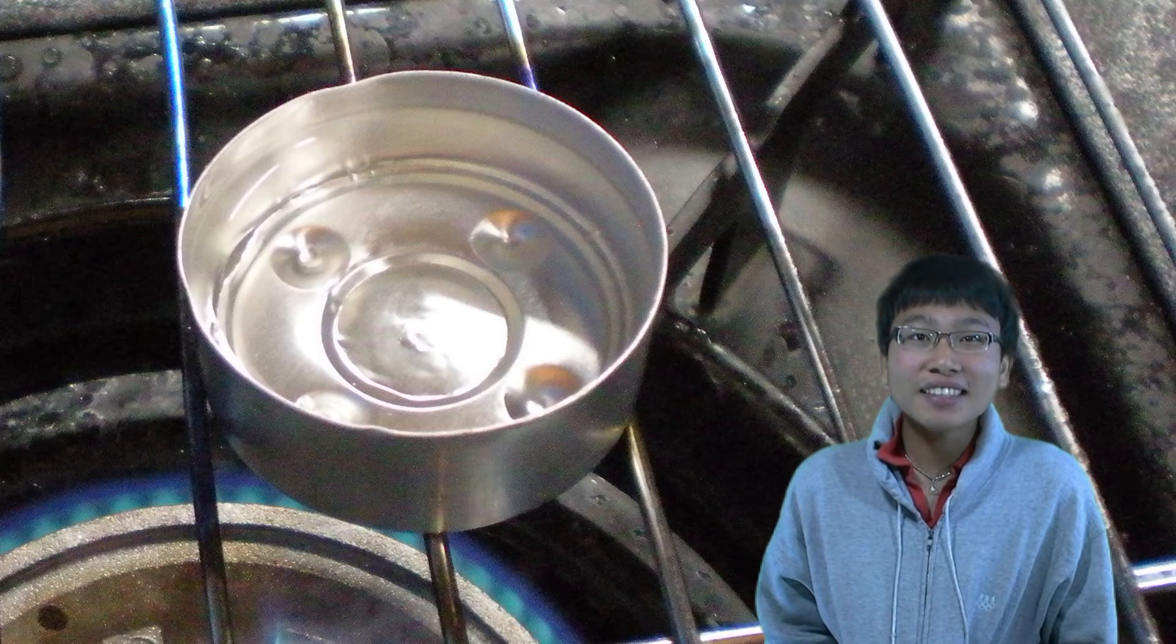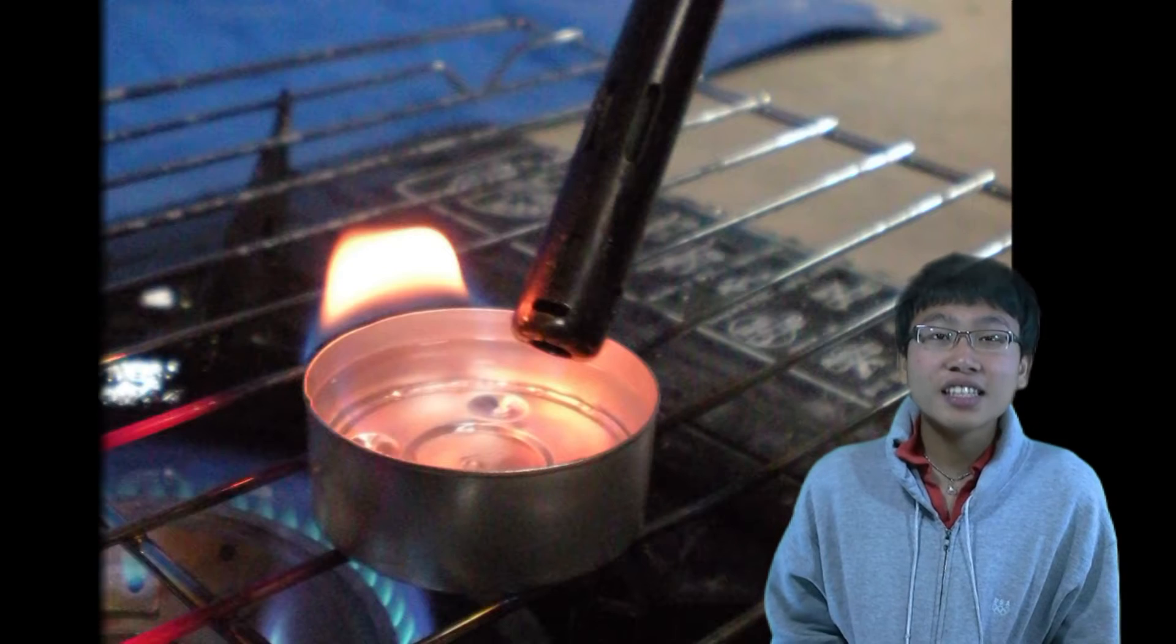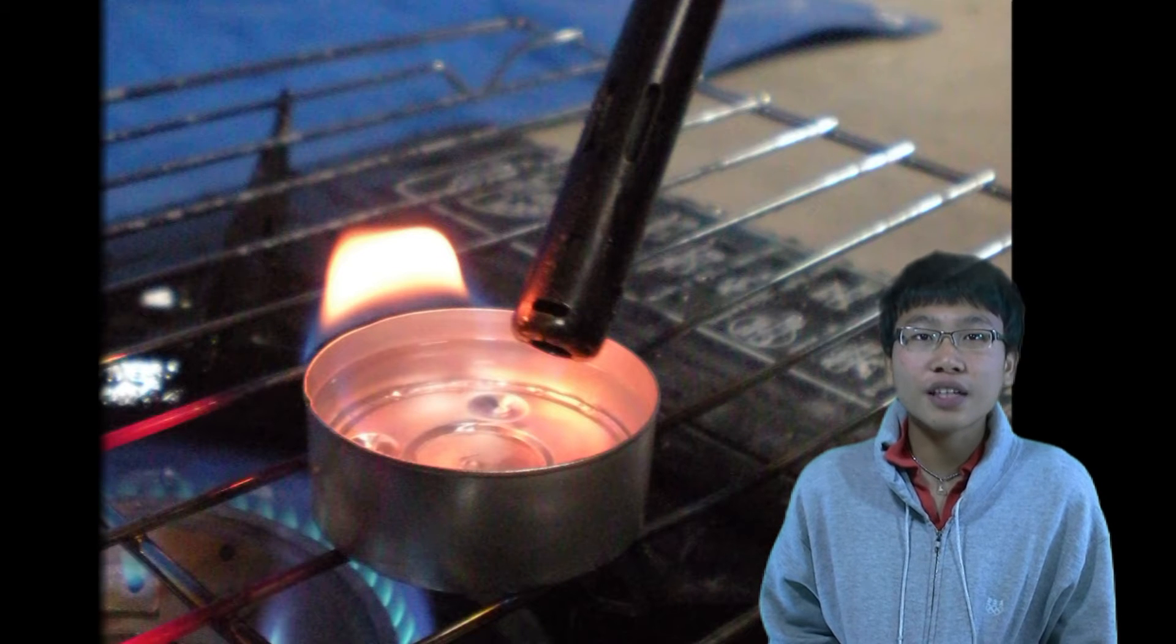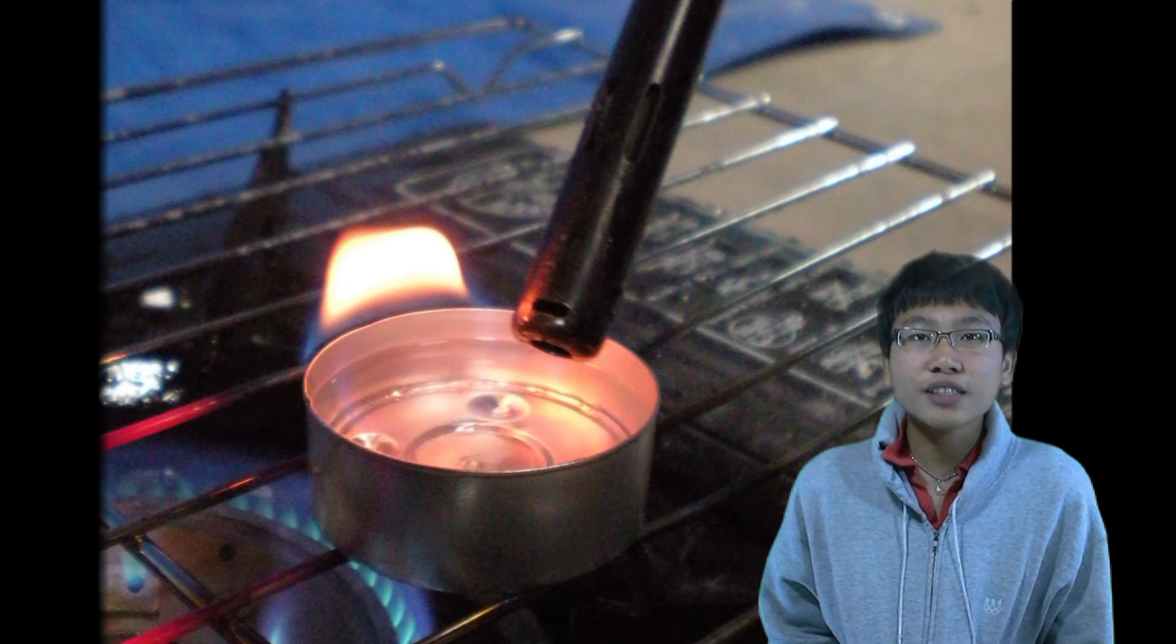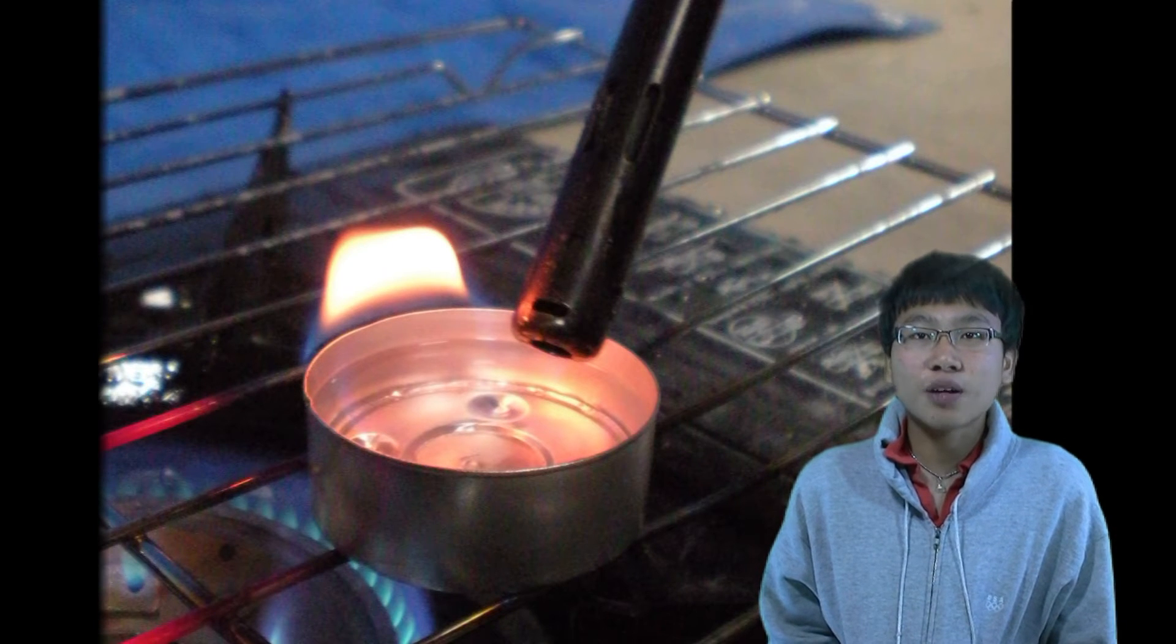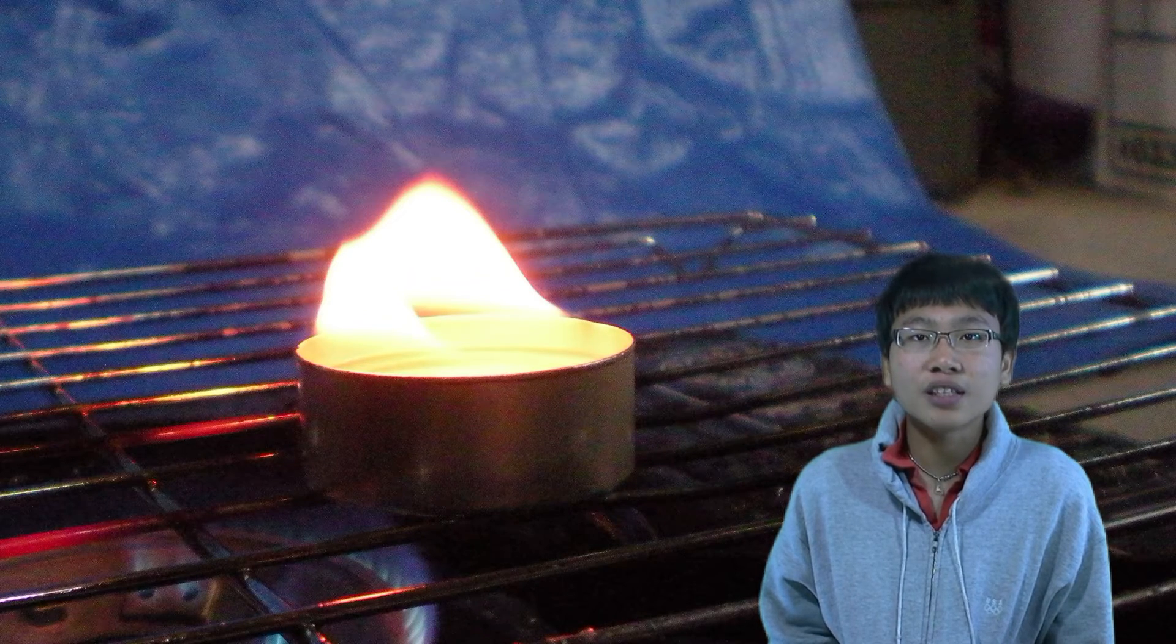First step: heat the candle wax to the liquid state and remove the wick. Second step: keep heating the candle wax to its flash point. The flash point of candle wax is around 395 degrees Fahrenheit. At this point, it can be ignited and will burn on its own.